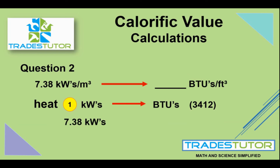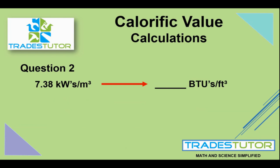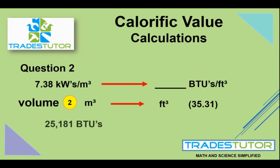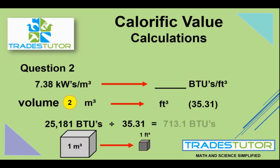We'll take 7.38 and multiply it by 3,412 because it's going to be a bigger number — more BTUs in a kilowatt — to give us 25,181. Don't forget, that's per cubic meter. Step two: cubic meter to cubic feet. We are going smaller, so we divide because a cubic meter is much bigger than a cubic foot. We end up with 713.1 BTUs per cubic foot, which is another way to express the calorific value of a gas that can also be expressed as 7.38 kilowatts per cubic meter.